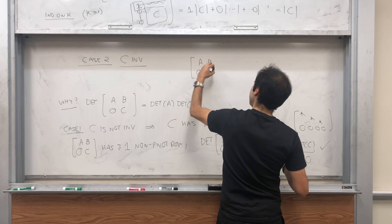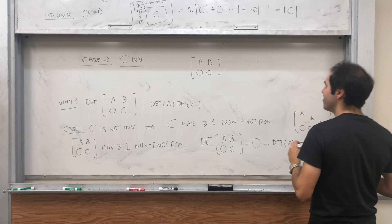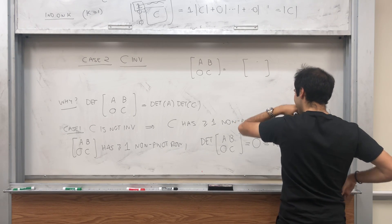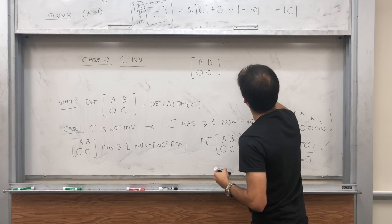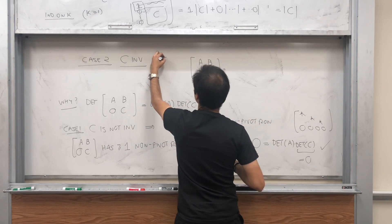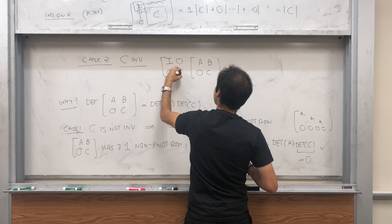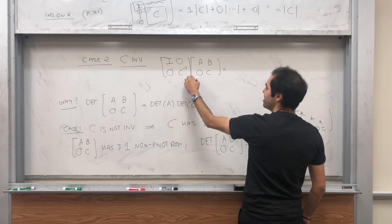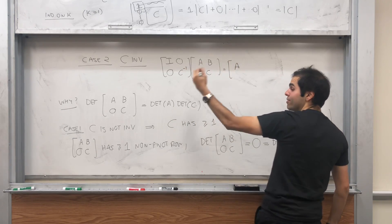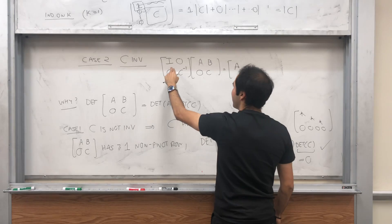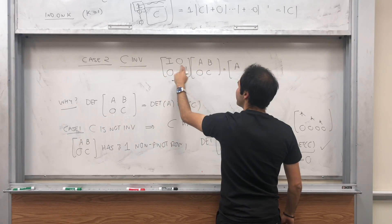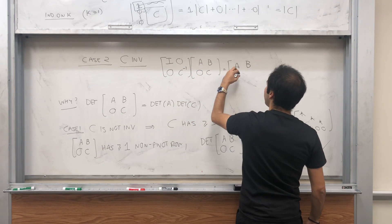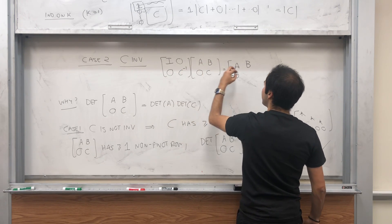C is invertible. Then it turns out [[A, B], [0, C]] you can write in the following very nice way. It's [[I, 0], [0, C^{-1}]] times [[A, B], [0, C]]. If you multiply this matrix by [[I, 0], [0, C^{-1}]], which we know exists now, you get—and you can rigorously justify just by multiplying every entry—so I times A which is A, I times B which is B, and then 0, and then C^{-1} times C which is the identity. So [[A, B], [0, I]].